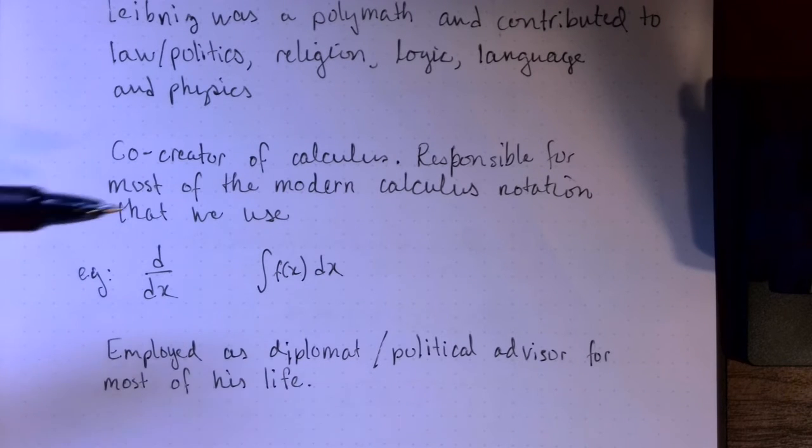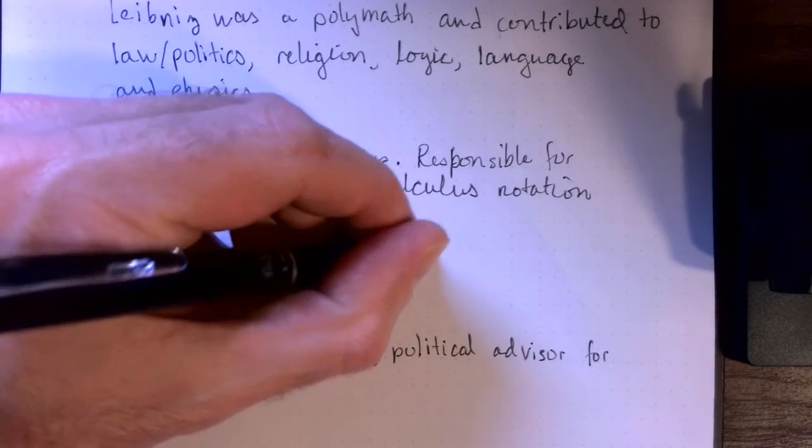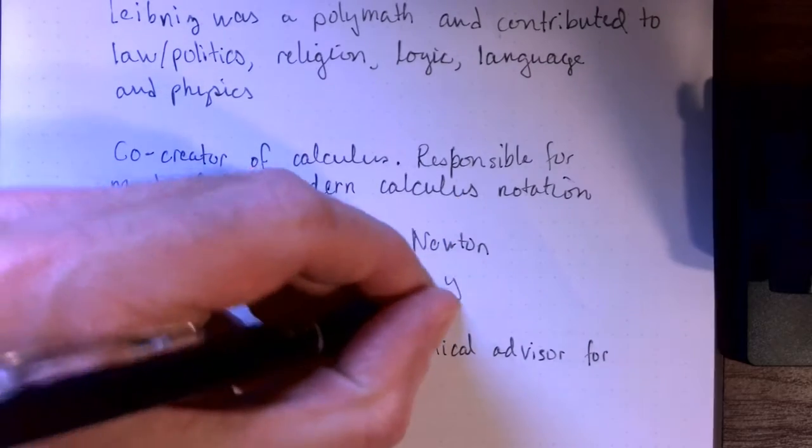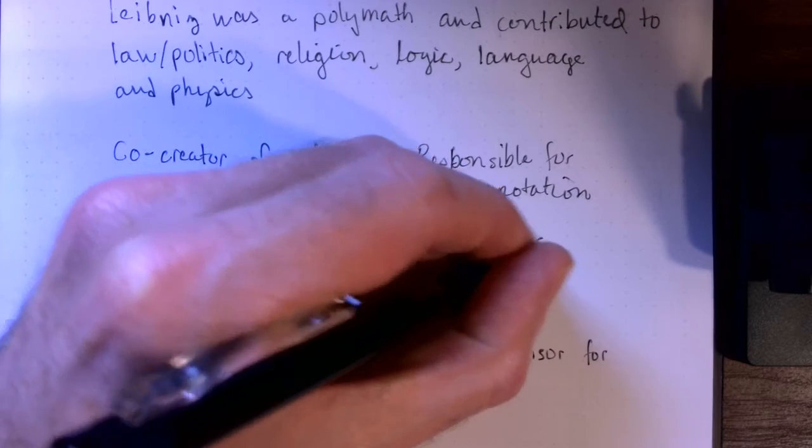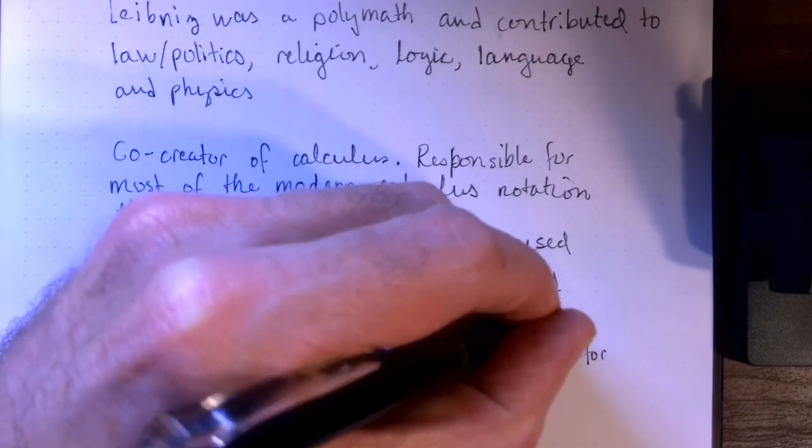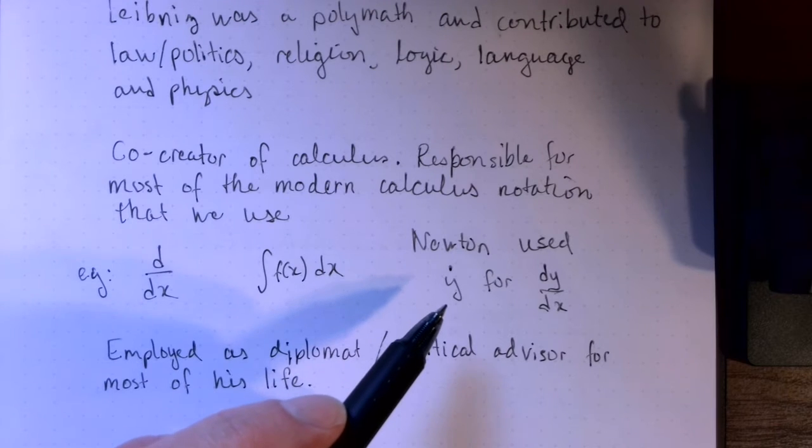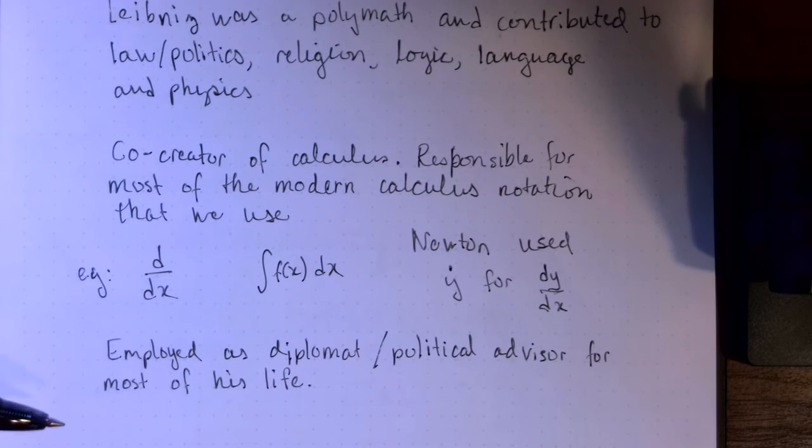Leibniz was also responsible for most of the modern calculus notation that we use nowadays. For example, dy over dx, that's the Leibniz notation, whereas Newton would have used y dot for dy over dx. This notation is still pretty widely used in books about physics, for understandable reasons mainly for Newton's contributions to mechanics. But for most of his life, Leibniz was actually employed as a diplomat slash political advisor. So he wasn't a university professor like Newton. He had another job and kind of invented calculus on the side.